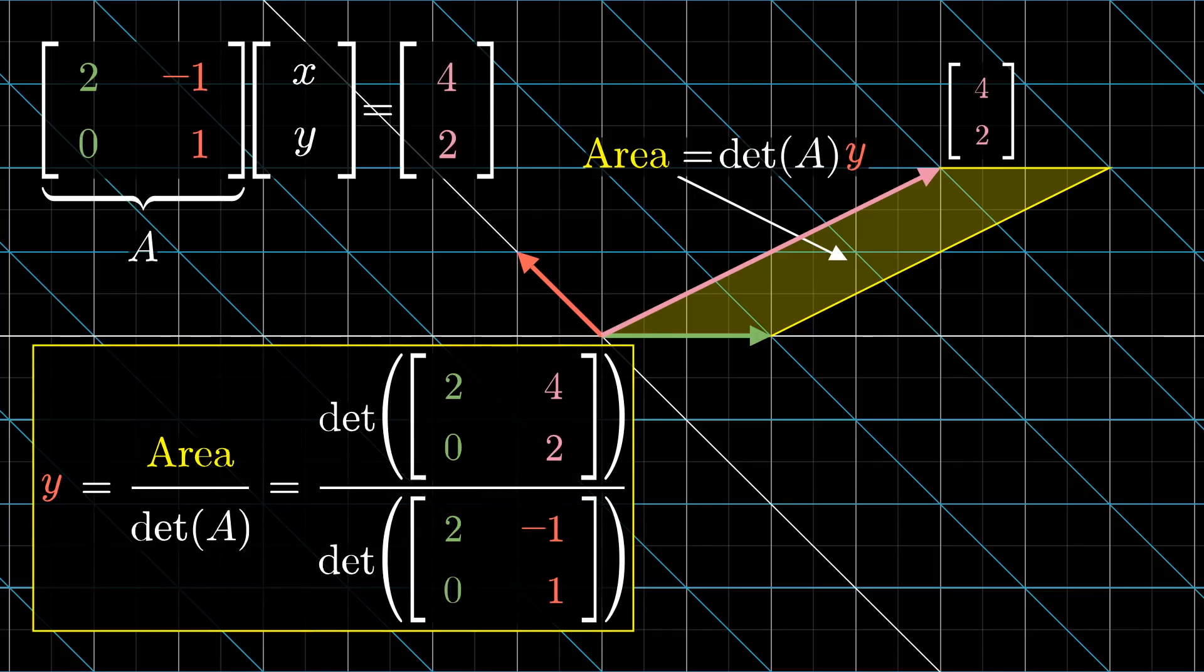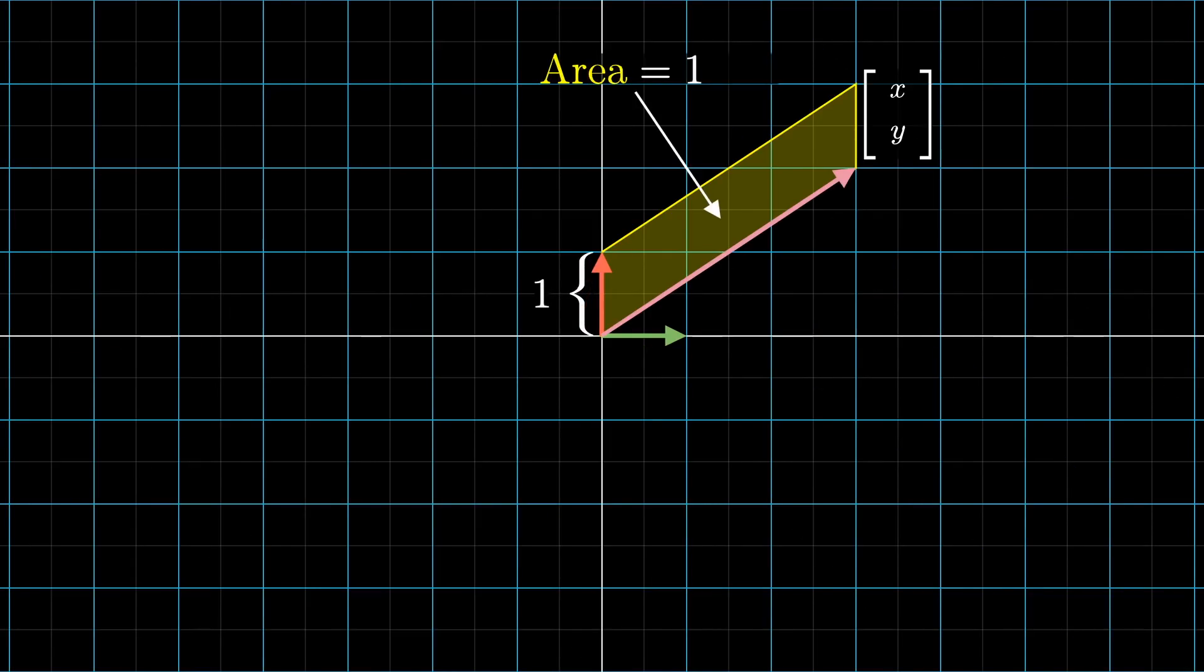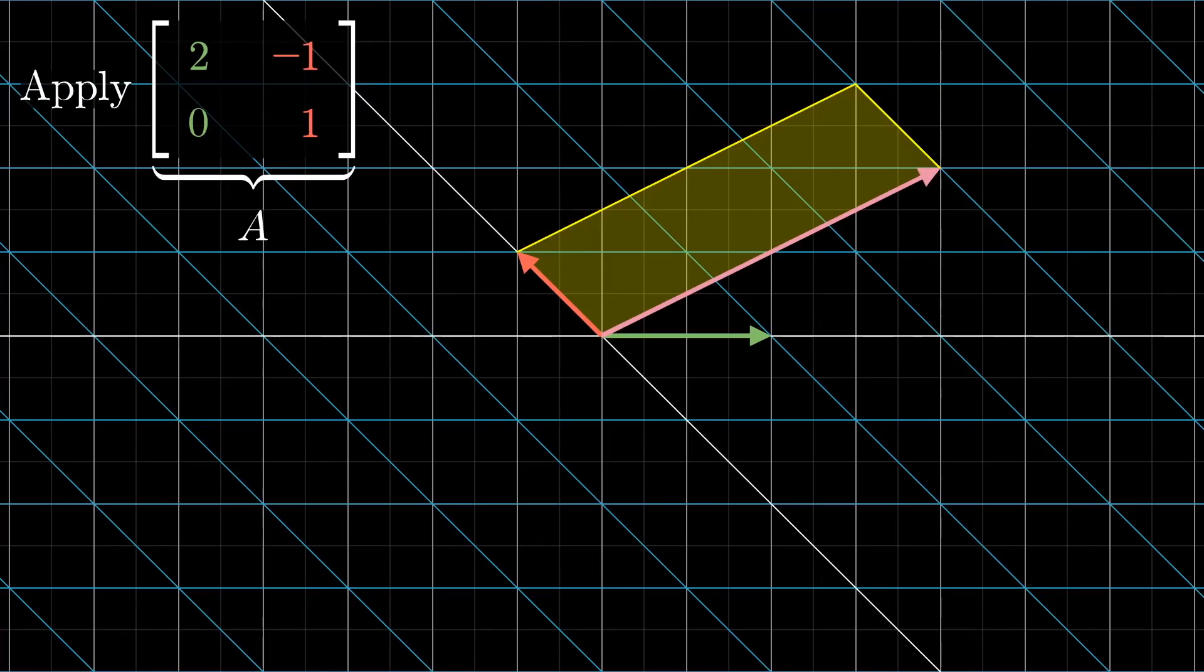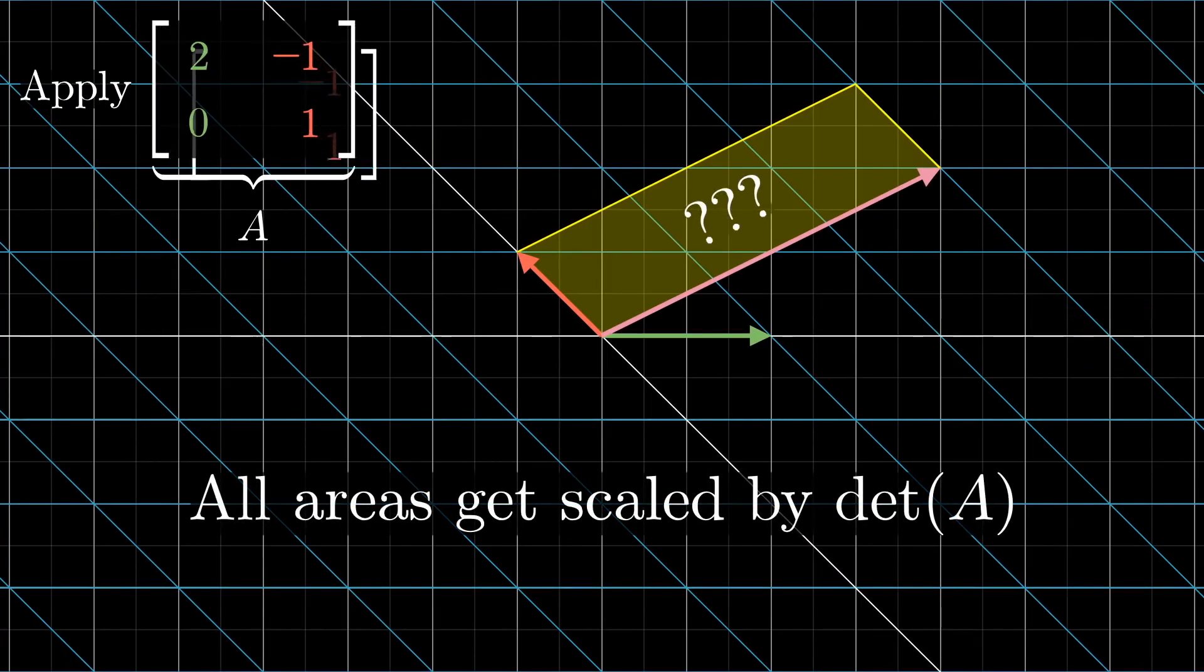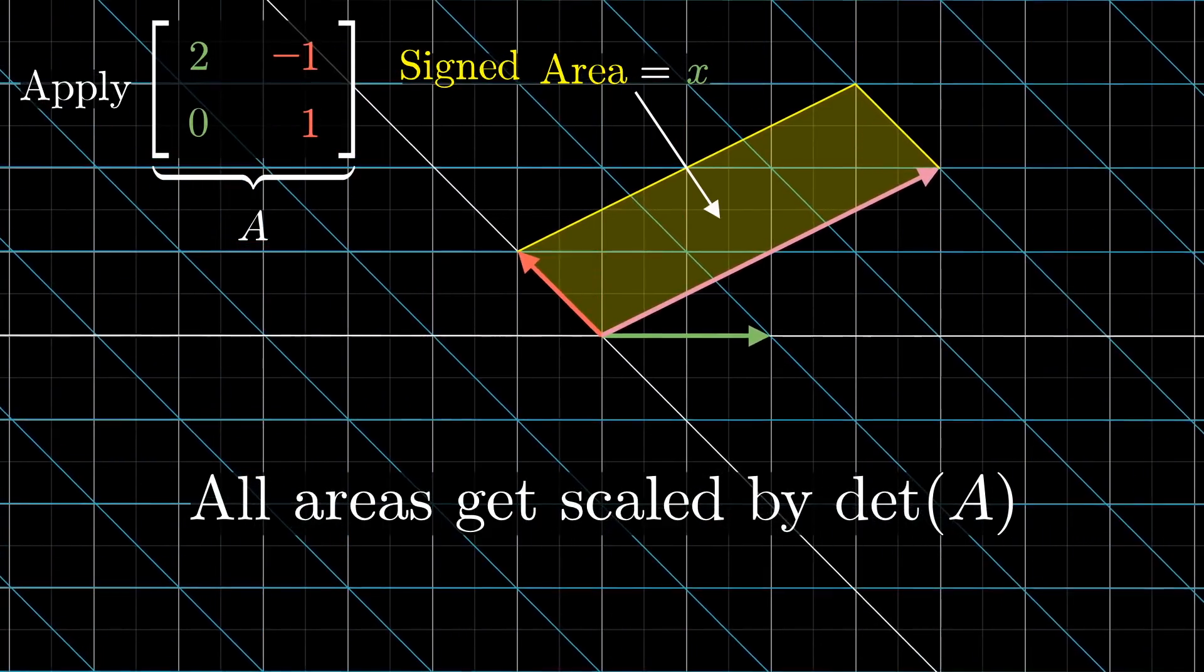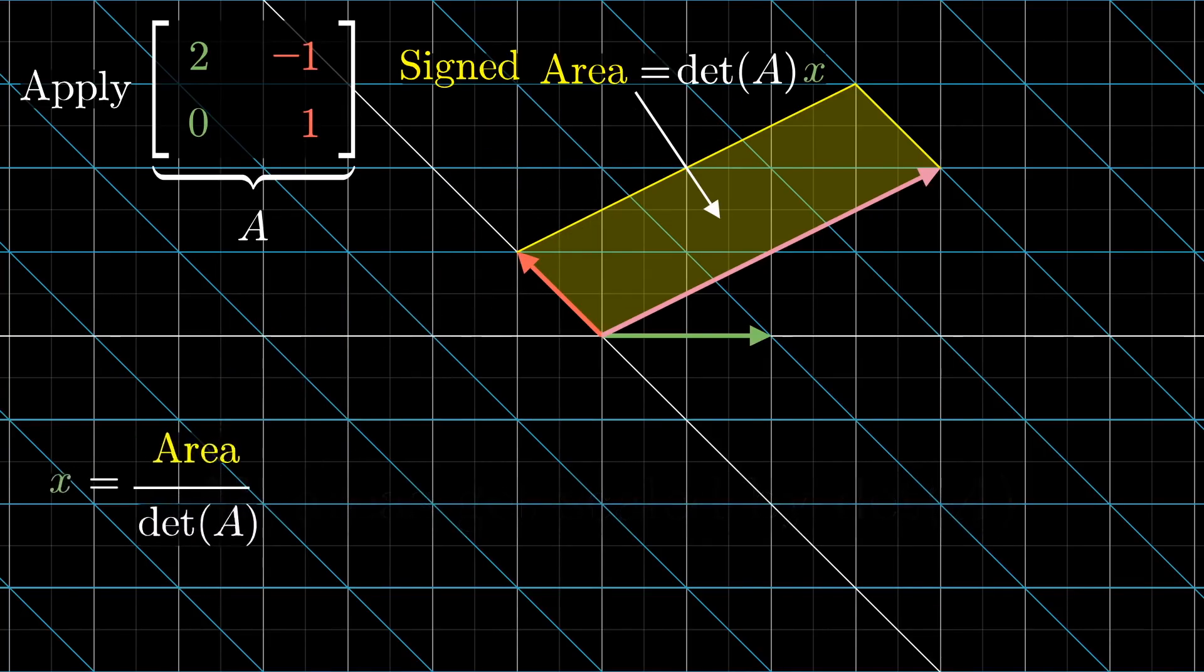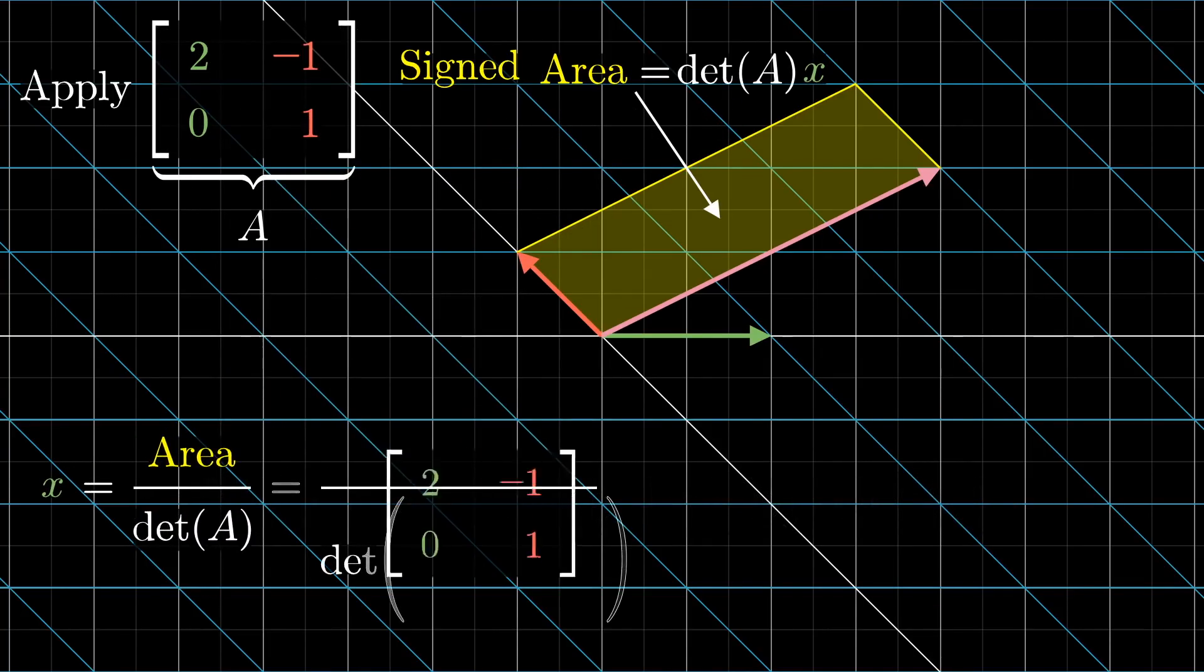Likewise, the same idea can give us the x-coordinate. Look at the parallelogram we defined earlier, which encodes the x-coordinate of the mystery input vector, spanned by that vector and j-hat. The transformed version of this guy is spanned by the output vector and the second column of the matrix, and its area will have been multiplied by the determinant of that matrix. So, to solve for x, you can take this new area divided by the determinant of the full transformation.